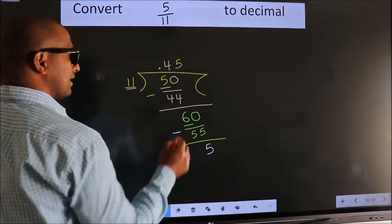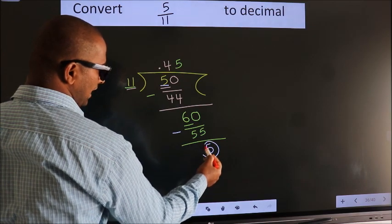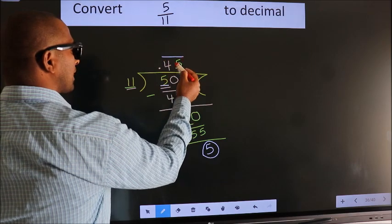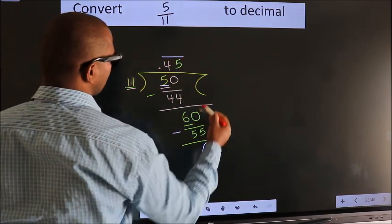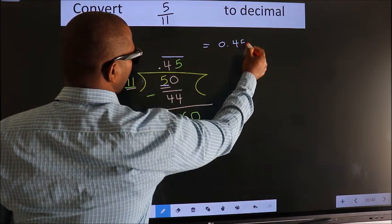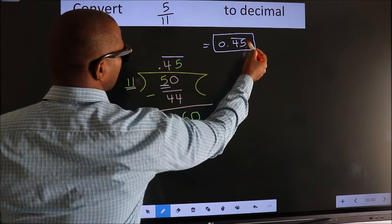Remember, earlier we had 5. We got 5 again. That means we get bar on these two numbers. Therefore, our answer is 0.45, bar on these two numbers. This is our answer.